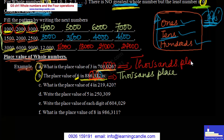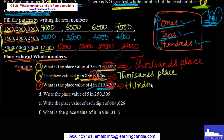Example C: the question is what is the place value of four? The place value of four in this number is hundreds place — hundreds place.